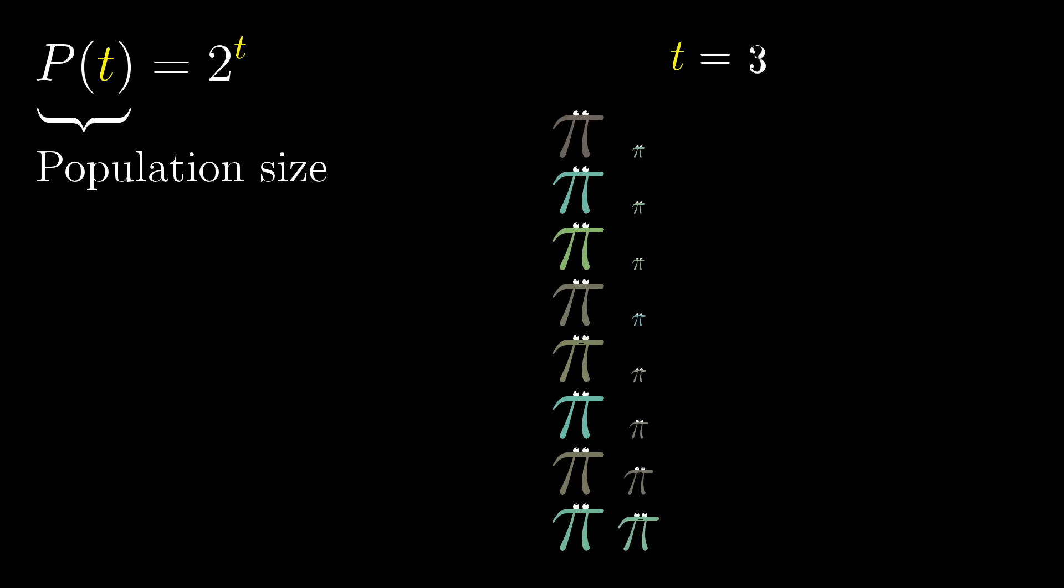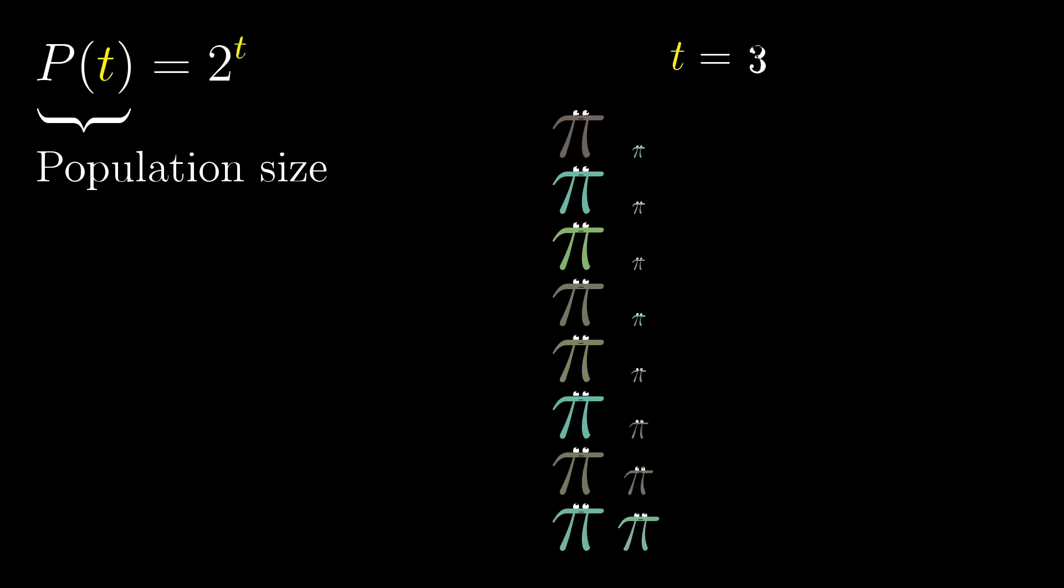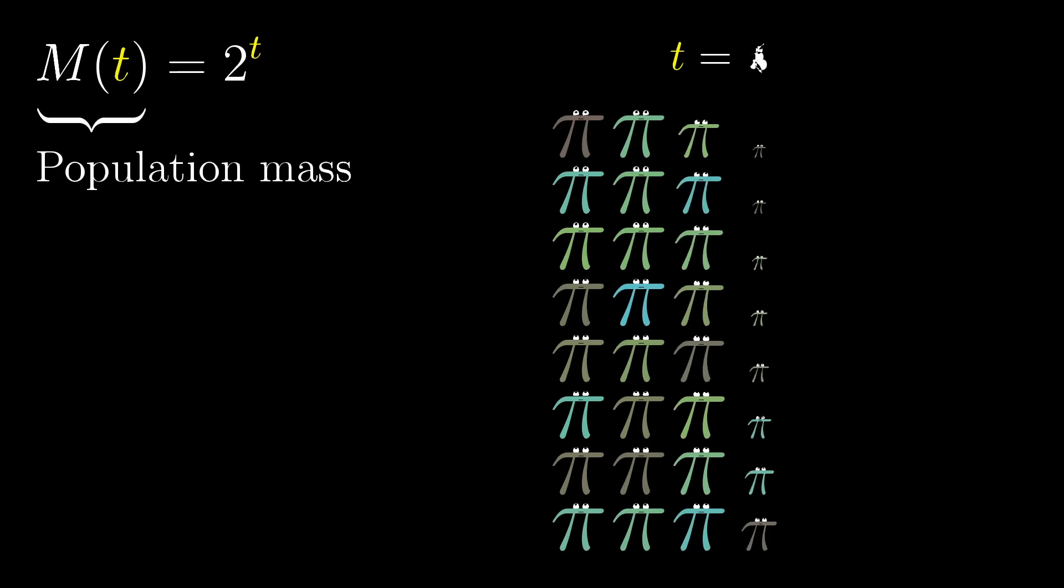And actually, instead of population size, which grows in discrete little jumps with each new baby pie creature, maybe let's think of 2 to the t as the total mass of the population. I think that better reflects the continuity of this function.